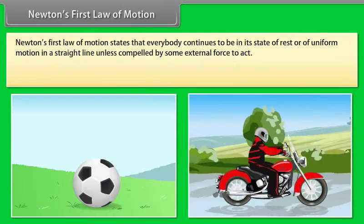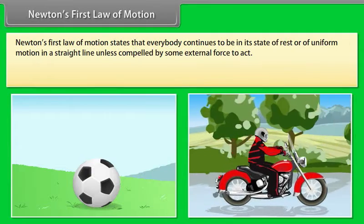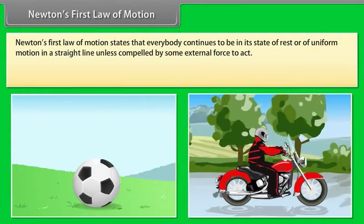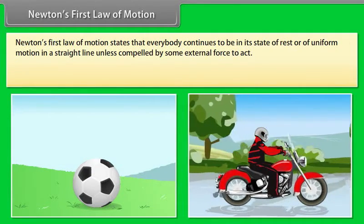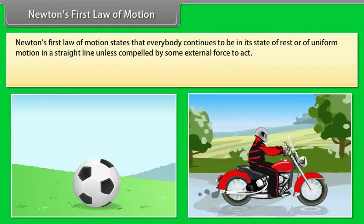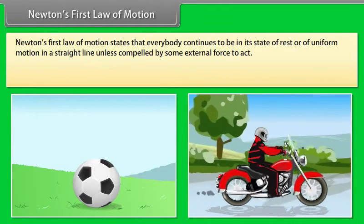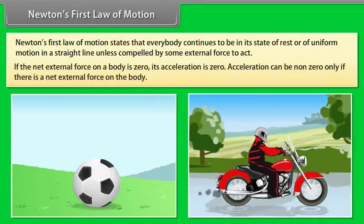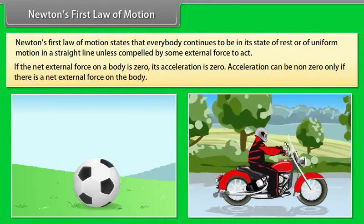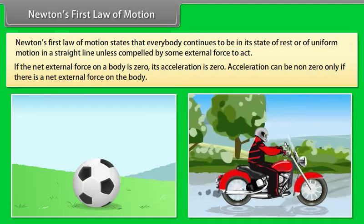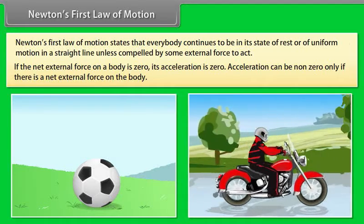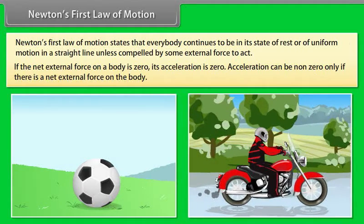Newton's First Law of Motion states that every body continues to be in its state of rest or of uniform motion in a straight line unless compelled by some external force to act. If the net external force on a body is zero, its acceleration is zero. Acceleration can be non-zero only if there is a net external force on the body.